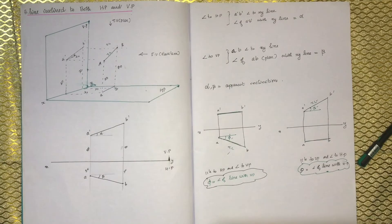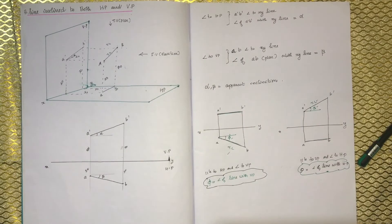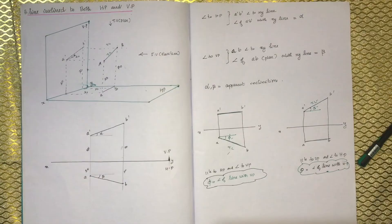We will do a simple and systematic procedure. There are two methods: the line rotating method and the plane rotating method. There are actually ten different problems you can do with this procedure.